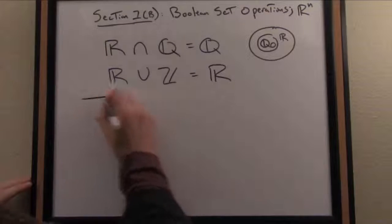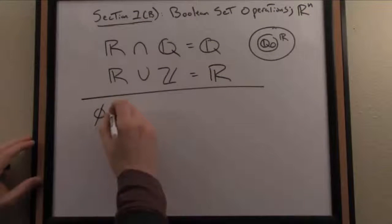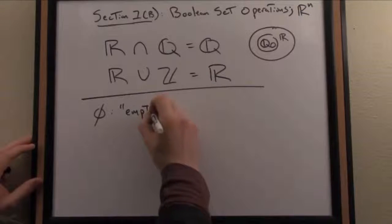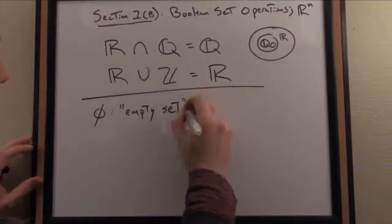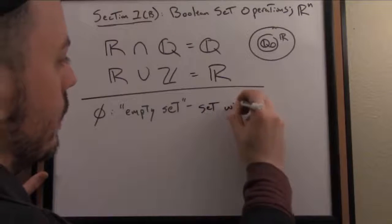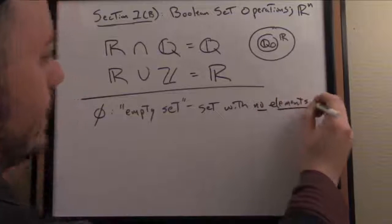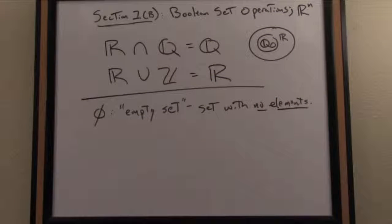There is a special set in set theory called the empty set, and we write it as a zero with a slash through it. By definition, it's the set with no elements. At first, it might seem strange—why would we bother to talk about a set with no elements? As I will argue, the empty set operates in a similar fashion to the number zero in our common number system. It acts as a kind of identity element.